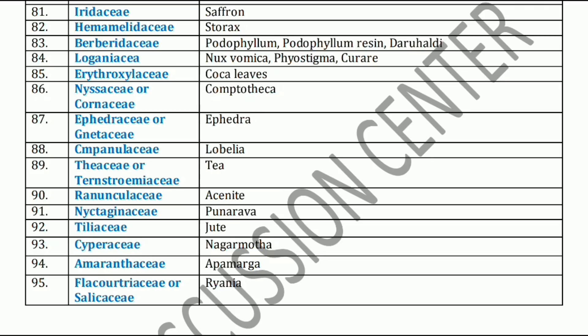Next family is Campanulaceae family. It includes Lobelia. Now, Theaceae family — Tea. These all come under alkaloids. Now, Ranunculaceae family. Ranunculaceae family includes Aconite. Nyctaginaceae family has Punarnava. Tiliaceae family has Jute. Next, Cyperaceae family. Cyperaceae family includes Nagarmotha. Amaranthaceae family has Apamarg.